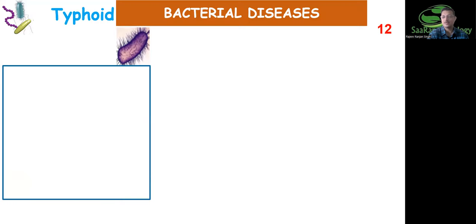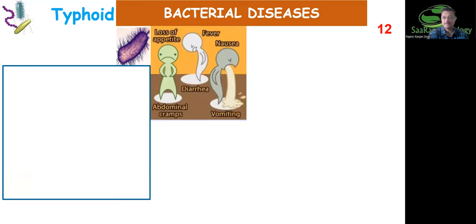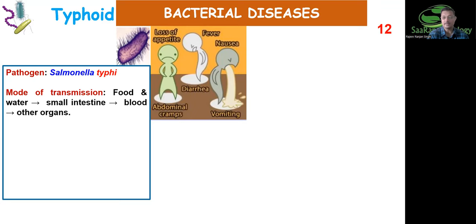First, let's focus on the bacterial disease typhoid. There is a famous story about a lady called Typhoid Mary — Mary Mallon — who was a carrier of typhoid and worked as a cook. She kept transmitting the disease unknowingly for a long period of time. The pathogen of typhoid is the bacterium Salmonella typhi — spelling: S-A-L-M-O-N-E-L-L-A T-Y-P-H-I.